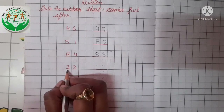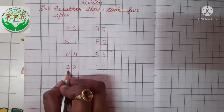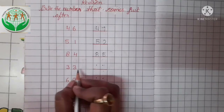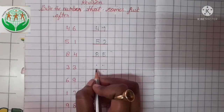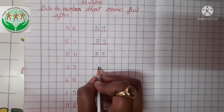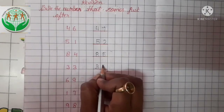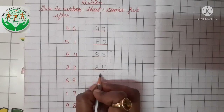Now see, this is number 33. Tell me, what comes just after 33? Yes, 34. So we write here number 34.